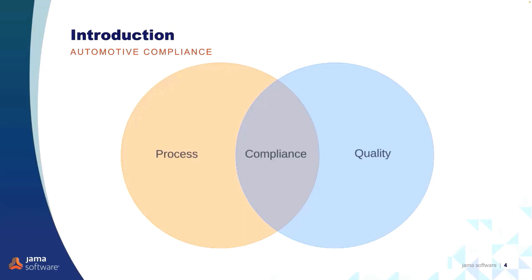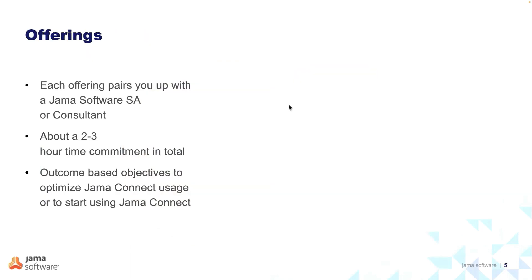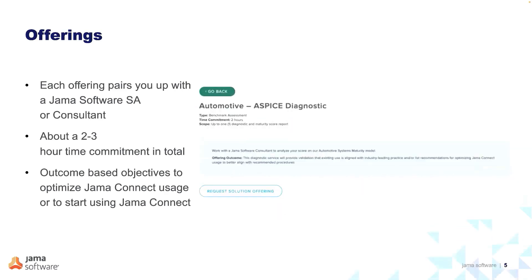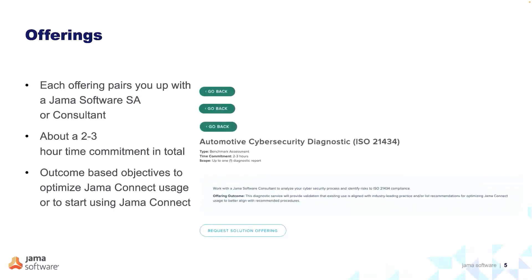We want to make the case that JAMA is a tool well suited to get you up and running quickly, optimized against popular automotive standards. To assist with this, we'll discuss the diagnostics that JAMA offers as a service to help you navigate these important compliance questions. Today we're highlighting offerings that will guide automotive customers or prospects with your compliance process. Whether you are a customer or a prospect, these diagnostics can be very helpful. There are three standards offerings: the ASPICE diagnostics, the Automotive Functional Safety diagnostics, and the Cybersecurity diagnostics.